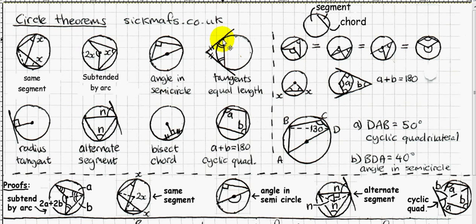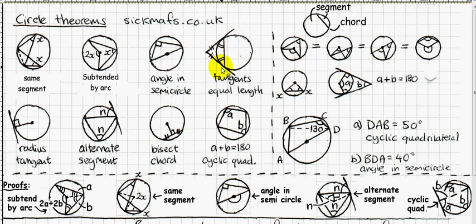A very important result of the two tangent lengths being equal is that if you connect the points where the tangents meet the circle, you get an isosceles triangle, and therefore those two base angles must be equal. This is the main way this rule is used in a GCSE exam.